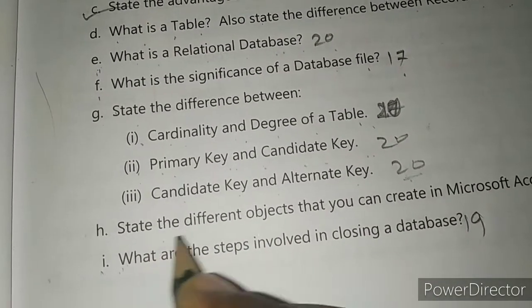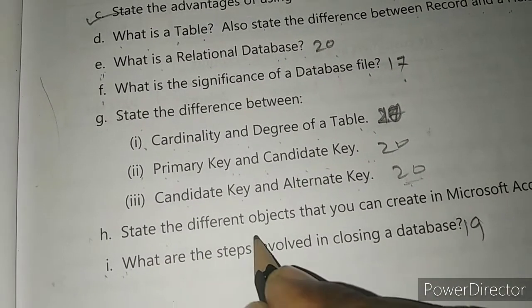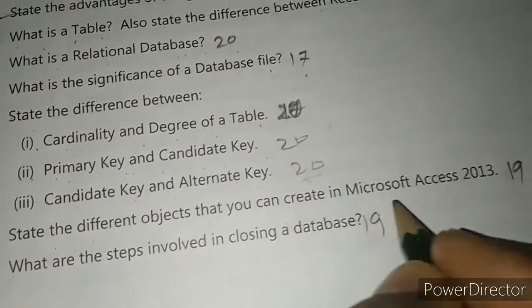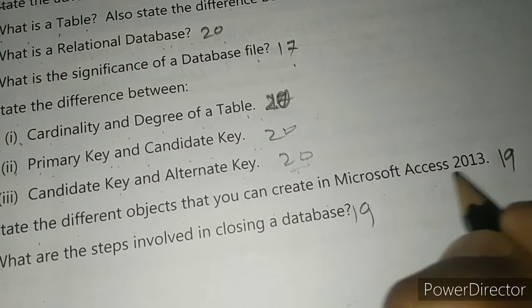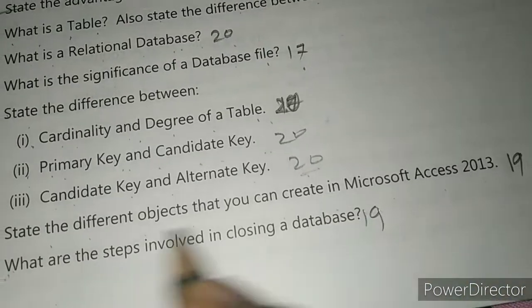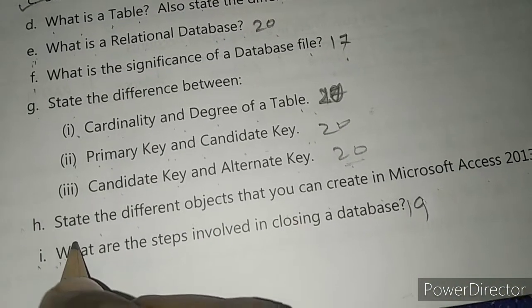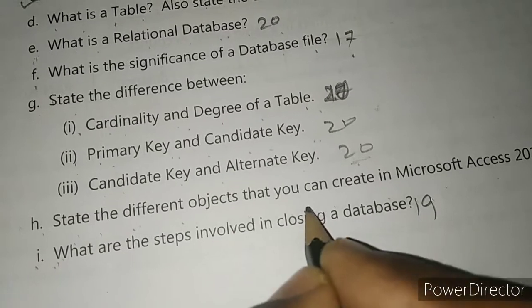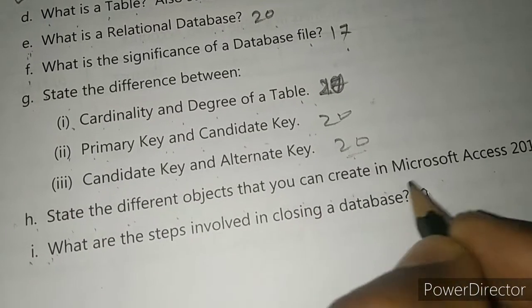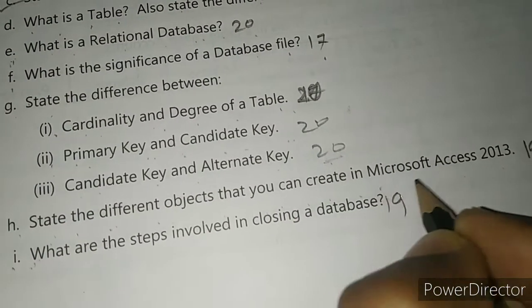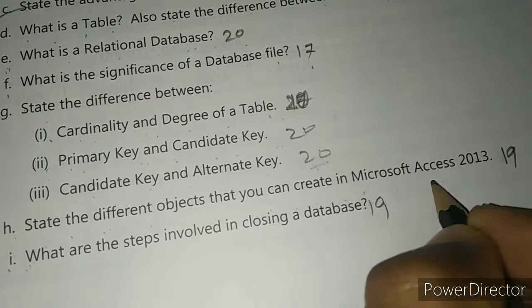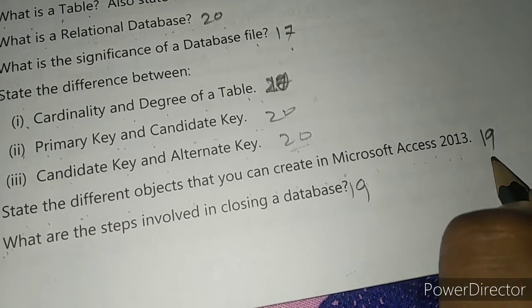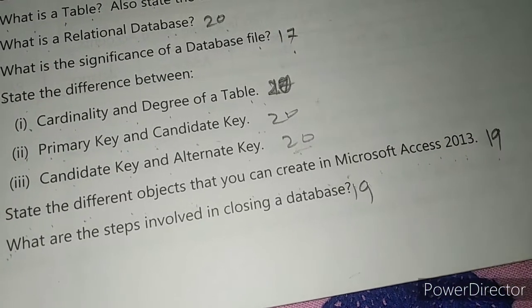Next, question H: state the different objects that you can create in Microsoft Access 2013. Its answer has been given on page number 19.